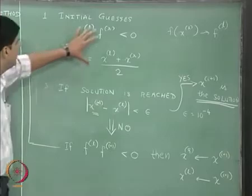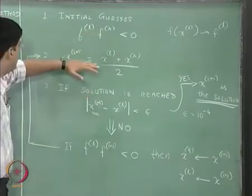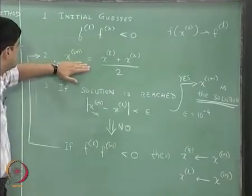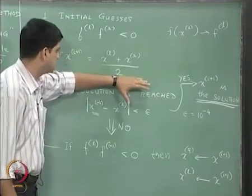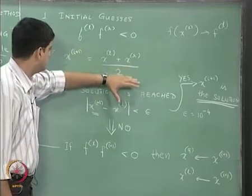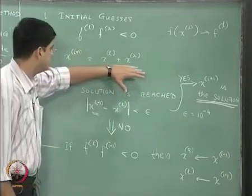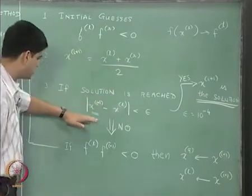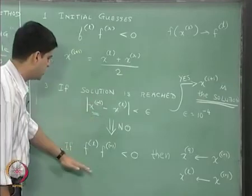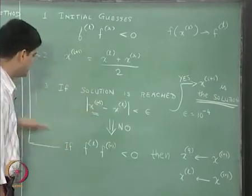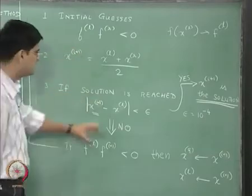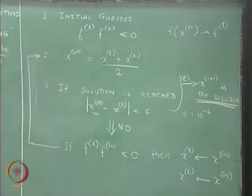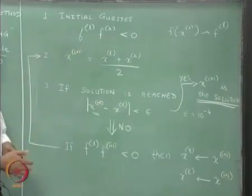This is the algorithm for the bisection method: start with initial guesses, figure out a way to get the new solution x i plus 1 — in the bisection method this guess is just the midpoint of the line connecting xl and xr. Check whether the solution is reached; if not, go back to step 2 and repeat until the solution is reached to a particular pre-specified criterion. This is going to be our algorithm.